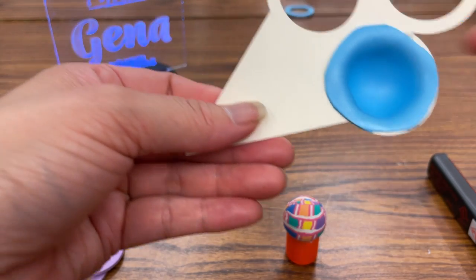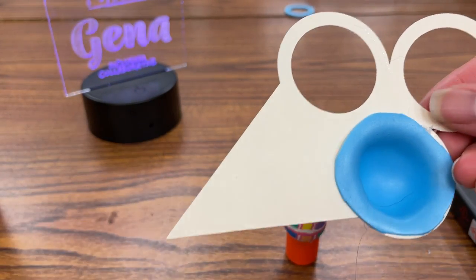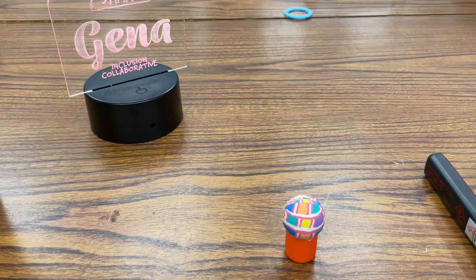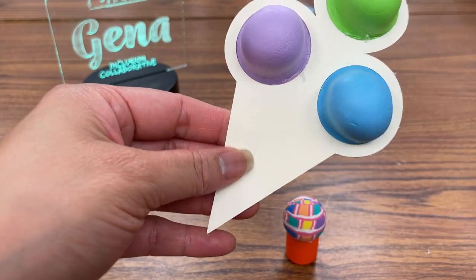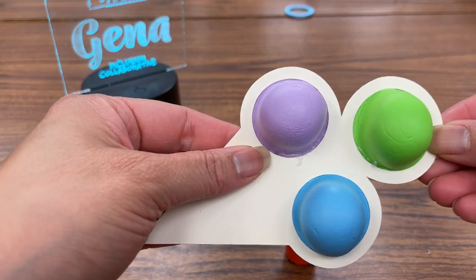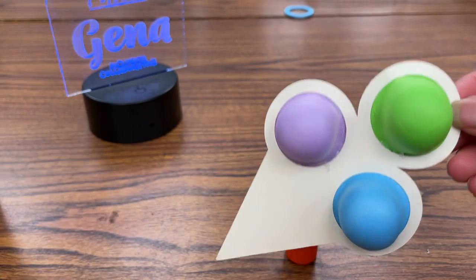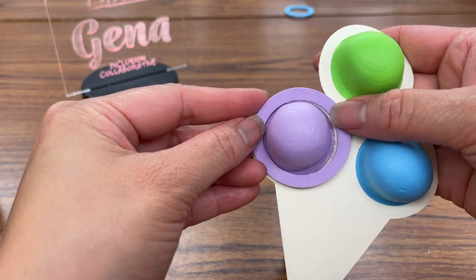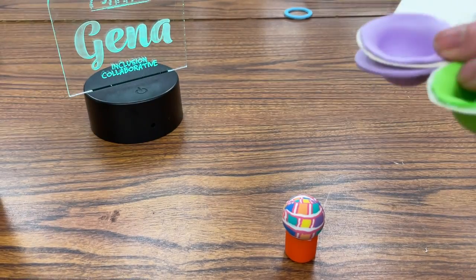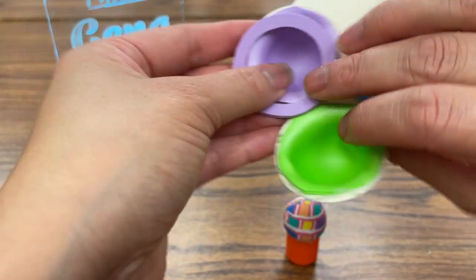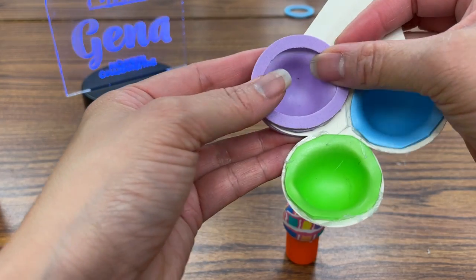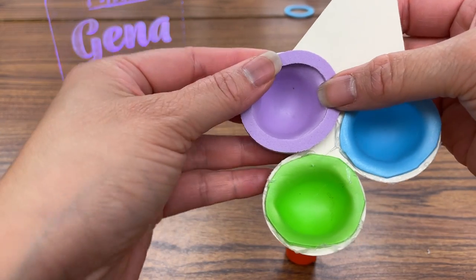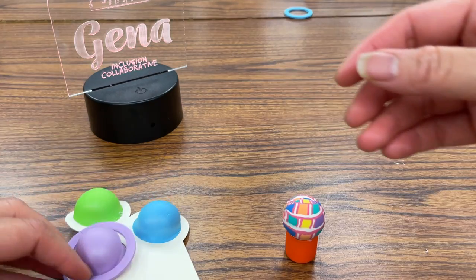All right so you're gonna go through and you're gonna do that with all three different colors until you have this and once you have all three colors glued on then you can go through and you're gonna glue each of the rings on the front and then just to make it look clean on the back you can glue it on the back as well.